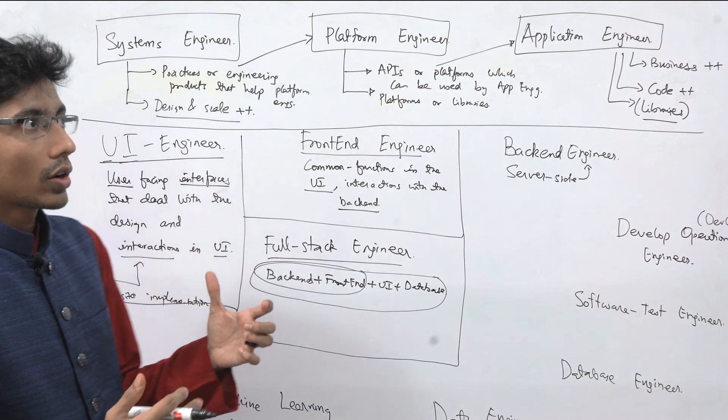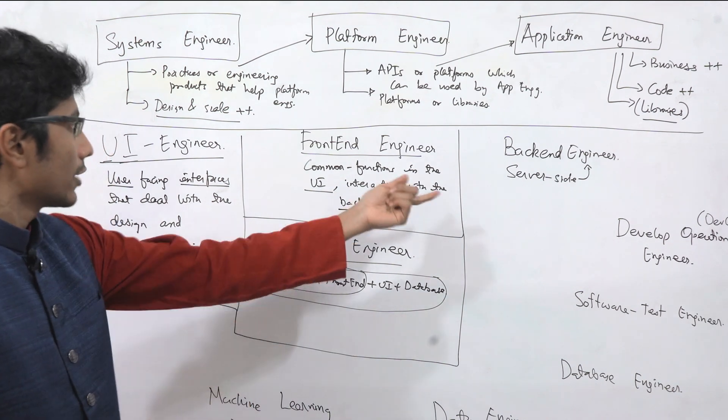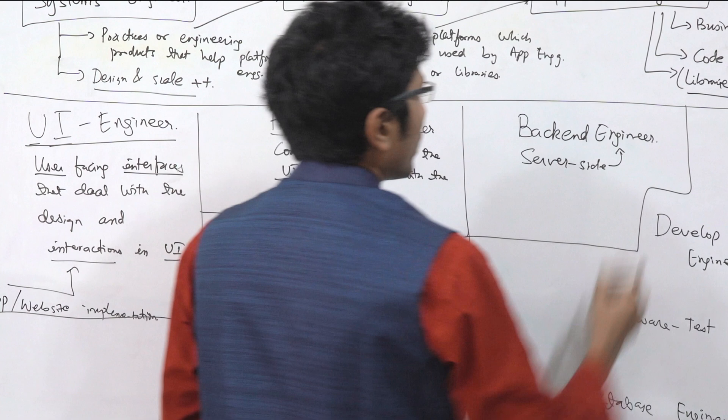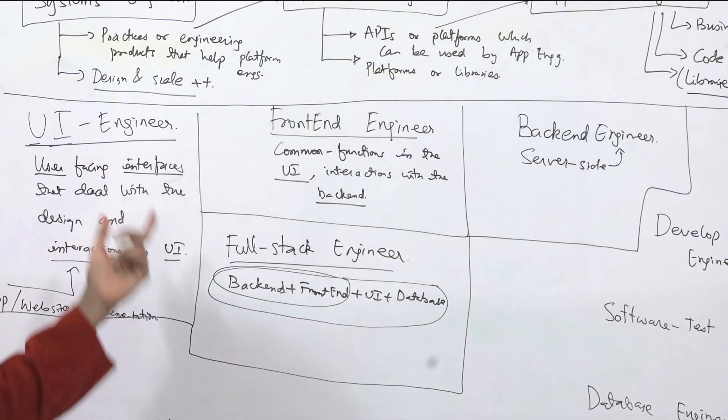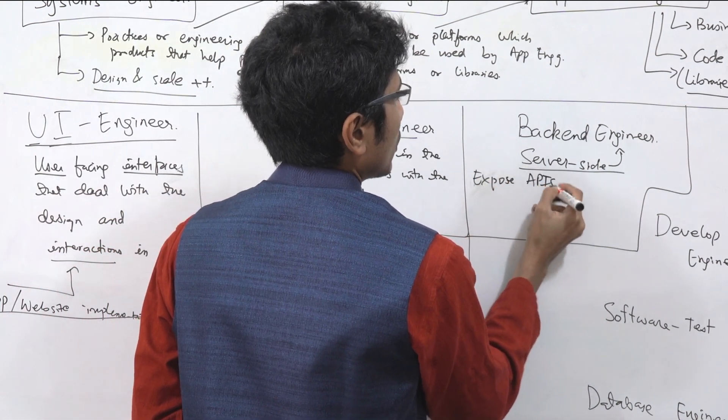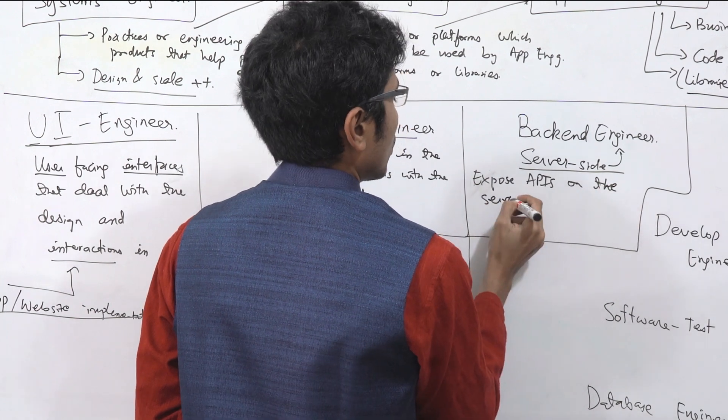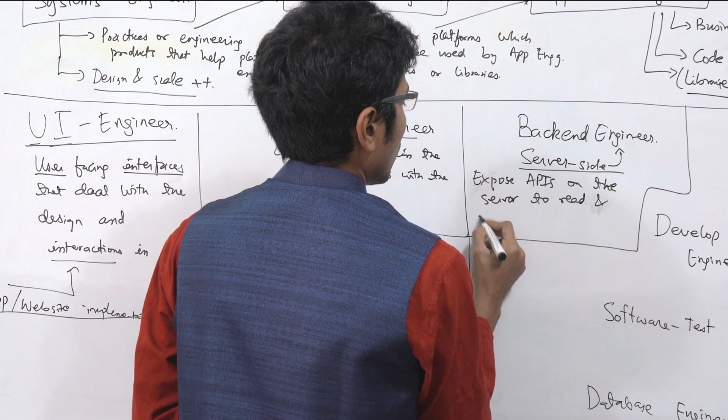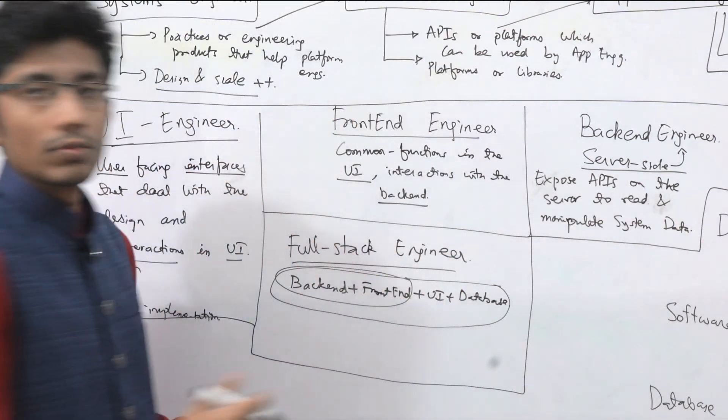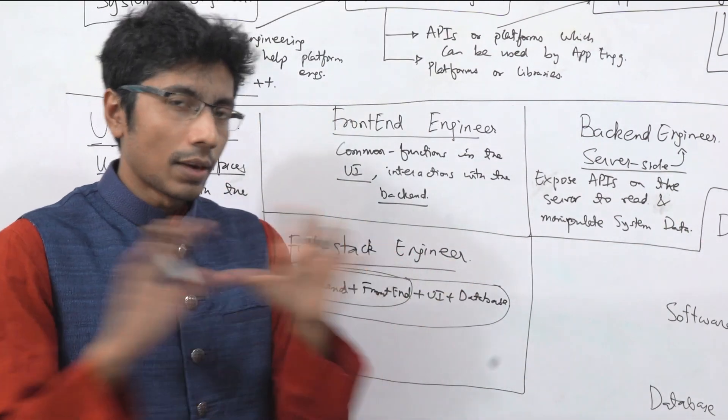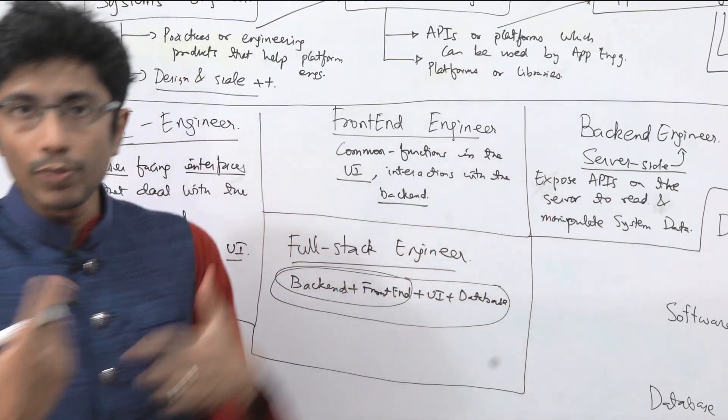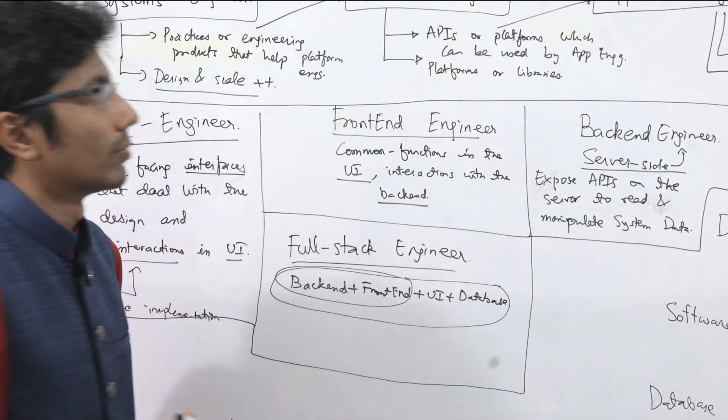Back-end I think is the most common type of engineering along with front-end and UI. The idea here is you expose APIs on the server to read and manipulate system data. System data might be the profile data of a user, also, but there is some data that is owned by your system. It needs to be read from time to time, it needs to be manipulated, it needs to be updated or deleted. That's the back-end engineer's job.